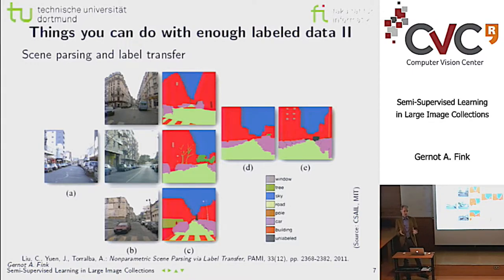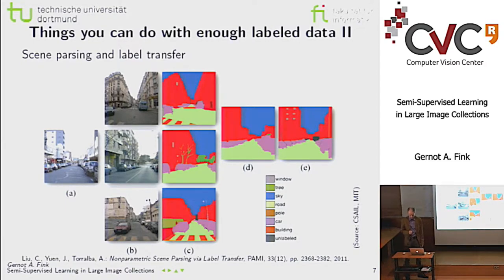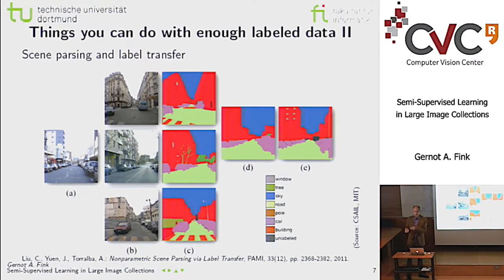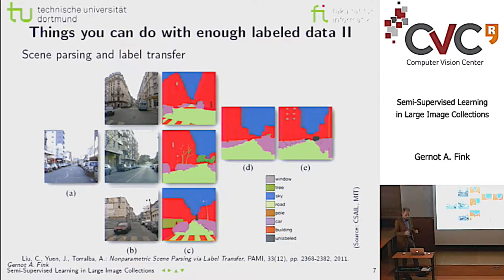Another challenging problem is labeling scenes — not just classifying them, but labeling every region: buildings, road, people, sky, vegetation, and so on. If you cast this as a nearest neighbor problem and have enough already-labeled scene images, you can find the most similar scene, grab those labels, and transfer them via a warping procedure to your new data. With enough labeled data, some problems stop being learning problems entirely and become retrieval problems.